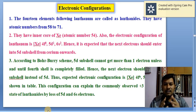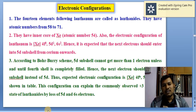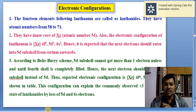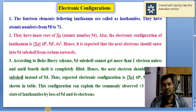Regarding the position of lanthanides, we discussed that lanthanides are placed in the 6th period in the periodic table and in the 3rd B group in the periodic table.